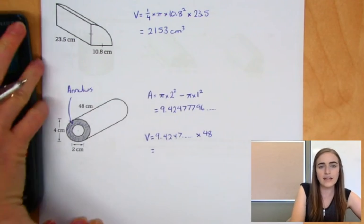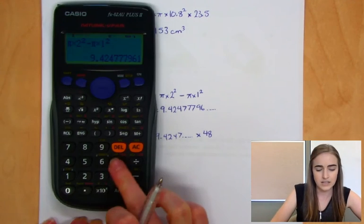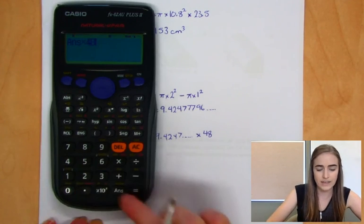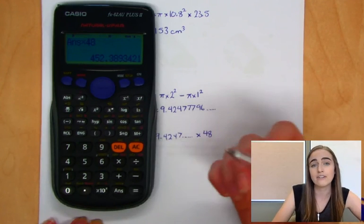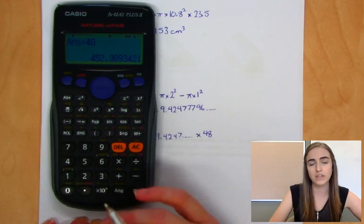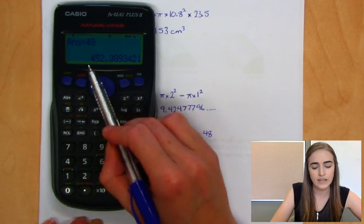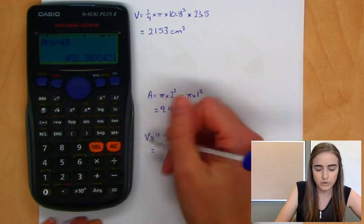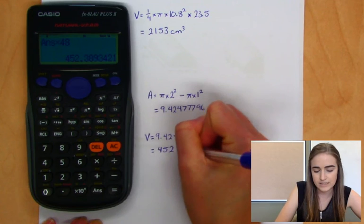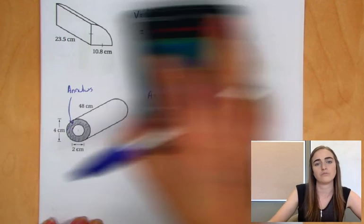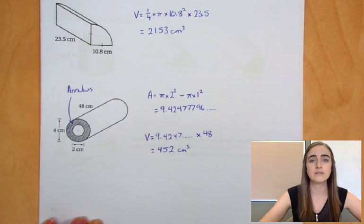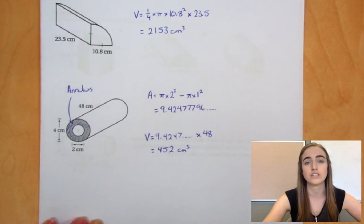So we're going to keep using that number that's in our calculator and then times that by 48. And now we can round our final answer. So you never round partway through a question. Always wait until the end. And if we round that to the nearest whole number, we would have 452 centimeters cubed for the volume of that shape. So that's a few examples of finding the volume of circular shapes.